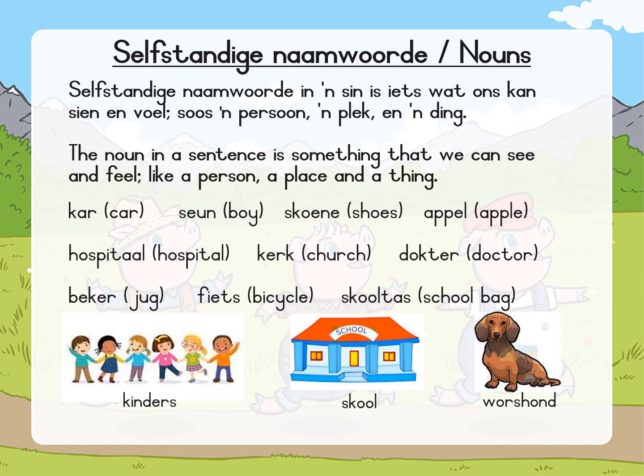Let's have a look at a few nouns. Kom ons kyk na 'n paar selfstandige naamwoorde. Kar, car. Seun, boy. Skoene, shoes. Appel, apple. Hospitaal, hospital. Kerk, church. Dokter, doctor. Beker, jug. Fiets, bicycle. Skooltas, school bag. And then we have a few pictures at the bottom again.